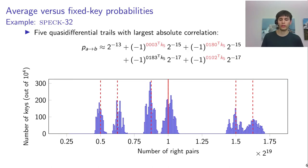So for example, going back to the example that I showed before, this six-round differential for SPECK. So there you find that there are actually five quasi-differential trails which have an absolute correlation that's significantly larger than most of the other quasi-differential trails. So using those five provides a pretty good model.